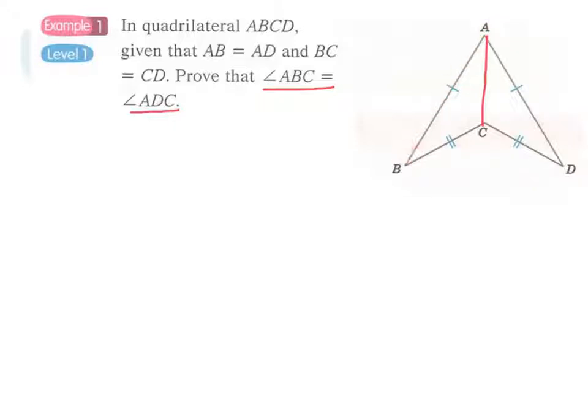And since these two pairs of sides AB, AD, BC, CD, they are equal because they are the given conditions. And of course, AC is the common side of these two triangles. When proving congruent triangles or similar triangles, the common side will always be the most important side of the two triangles.